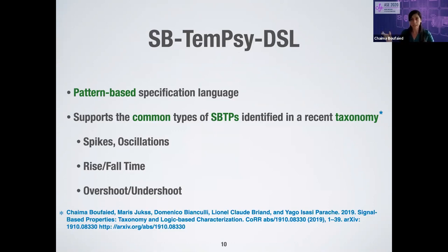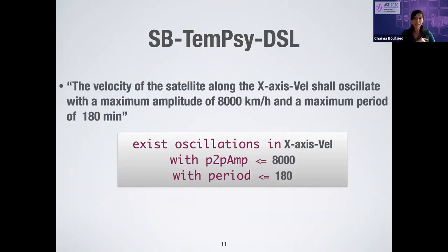Taking the same oscillations-based property example, we express it in SBTAMC DSL as shown in the gray box using the keywords 'exist oscillations in,' followed by the signal name. Then we have the width and the feature name, followed by its corresponding predicate. We have a constraint over the peak-to-peak amplitude in the second line, and the period in the third line.